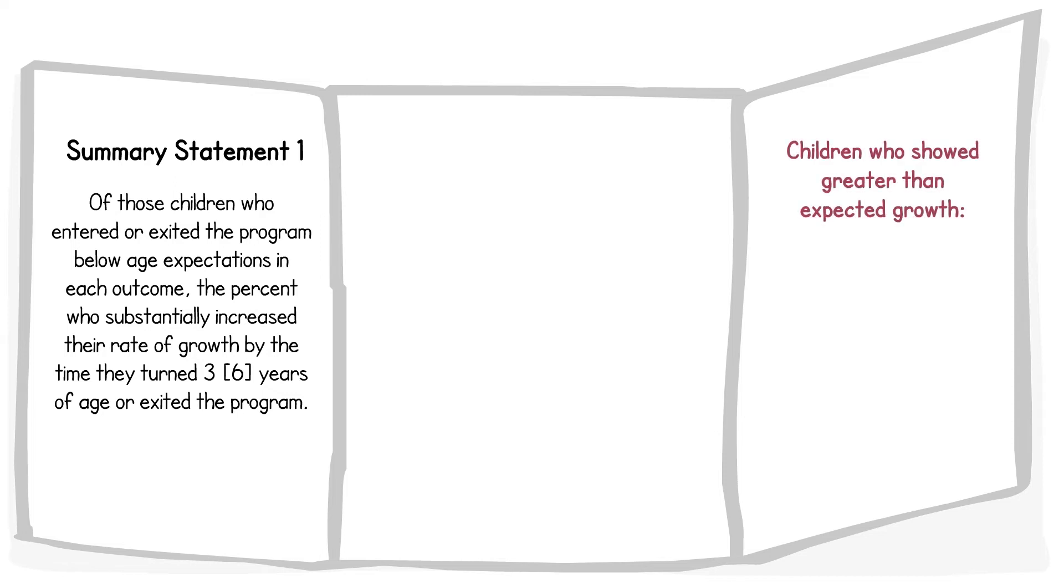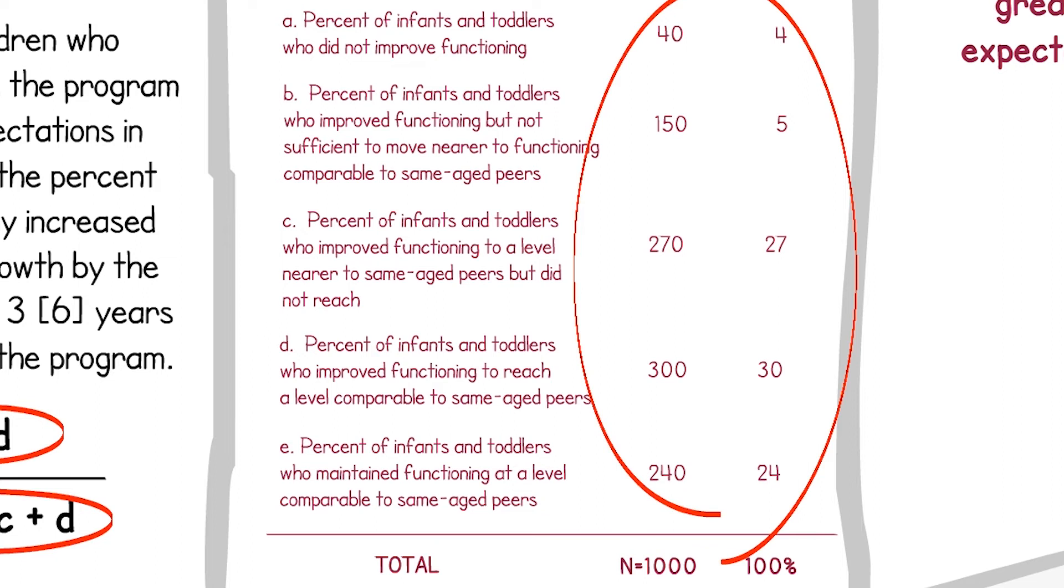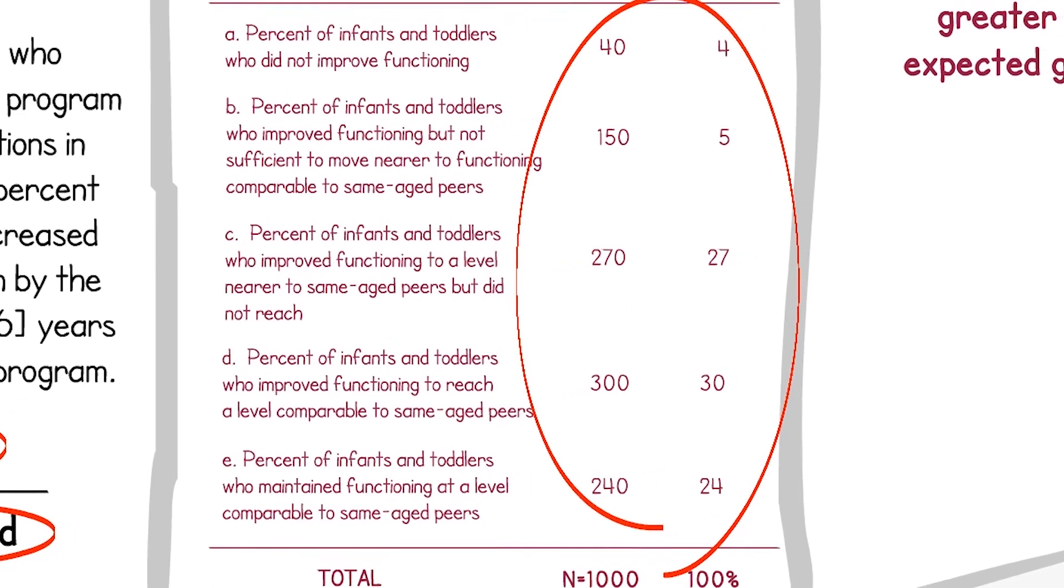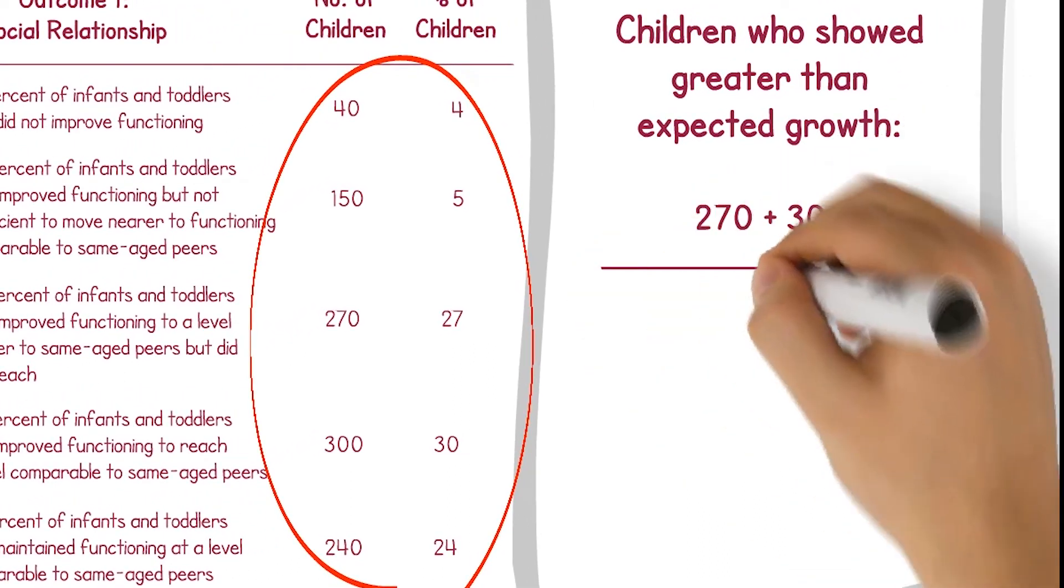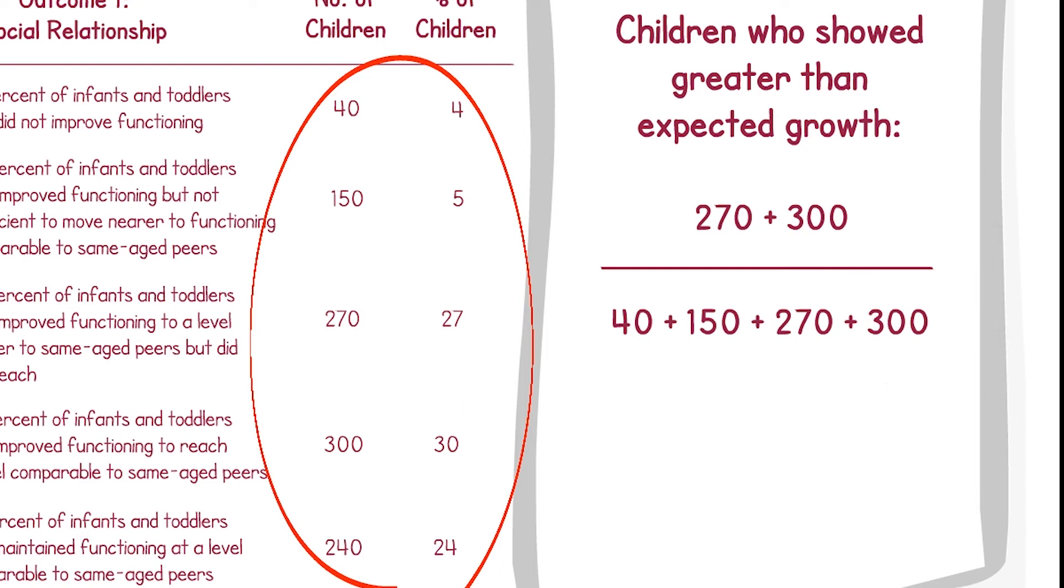Children who showed greater than expected growth. You can see from the formula that summary statement one is calculated by adding the children in categories C and D, and dividing that number by the sum of the number of children in categories A, B, C, and D. In this example, 75% of children who entered the program below age expectations in social relationships increased their rate of growth by the time they exited the program.